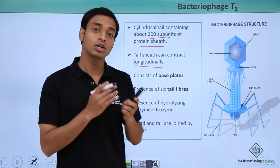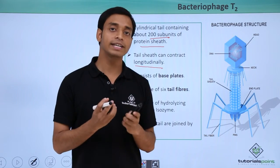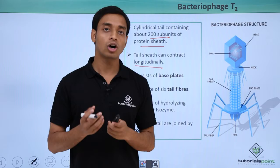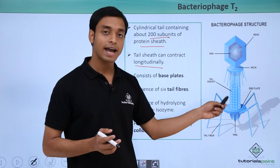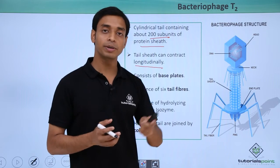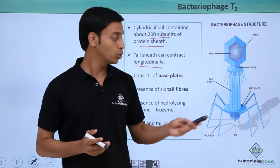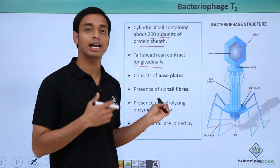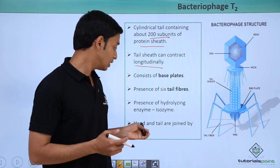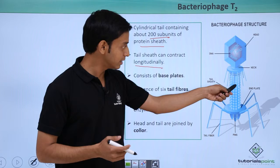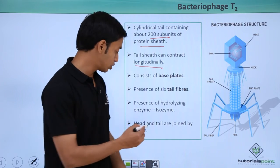These hydrolyzing enzymes help in creating a hole on the surface of the bacteria. Through this hole, the tube enters and the genetic material is pushed inside the host bacteria. So these hydrolyzing enzymes play a key role in the process of infection. The head and the tail are joined by a region known as the neck, also called the collar region.